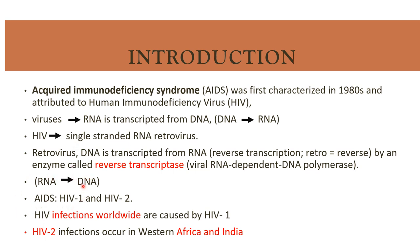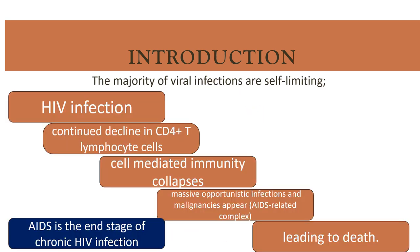AIDS involves two types: HIV-1 and HIV-2. HIV-1 infection is worldwide, while HIV-2 infection occurs in Western Africa and India. Majority of viral infections are self-limiting, but in HIV, infection causes continued declining of CD4 T-lymphocytes, cell-mediated immunity collapses, massive opportunistic infections and malignancies appear, leading to death. AIDS is the end stage of chronic HIV infection.